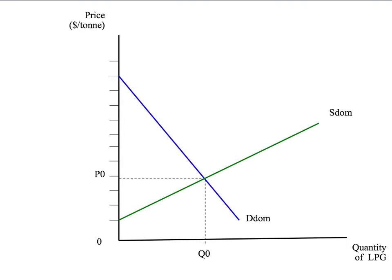To take a practical example, we're going to focus on liquefied petroleum gas or LPG. We've got the quantity on the horizontal axis and the price on the vertical axis.